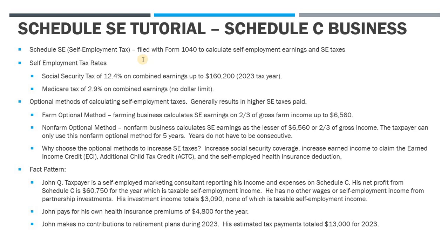Schedule SE is generally filed with your 1040 and it is used to calculate not only your self-employment earnings subject to tax but your self-employment taxes. The combined rate has two components: a Social Security tax of 12.4% and a Medicare tax of 2.9%. The Social Security tax applies to earnings up to $160,200 — that cap is as of the 2023 tax year and adjusts annually for inflation. The Medicare tax has no limit; it's 2.9% on all earnings subject to self-employment taxes.